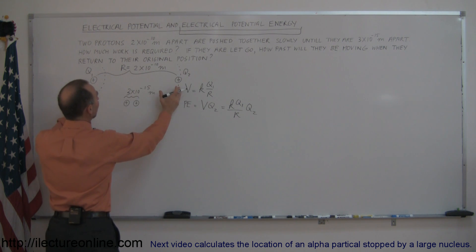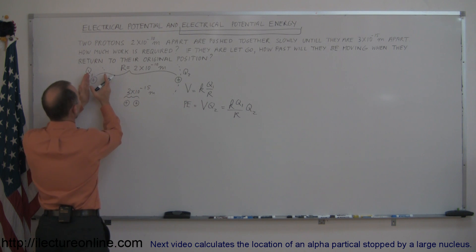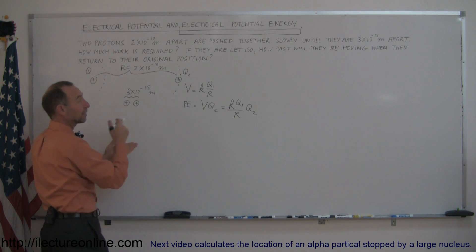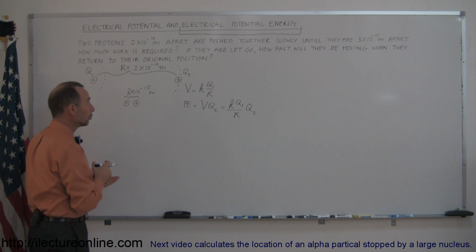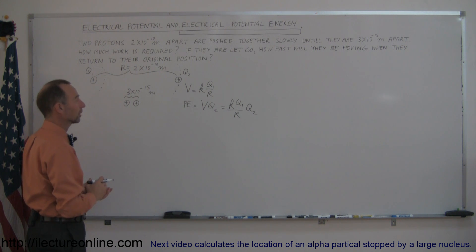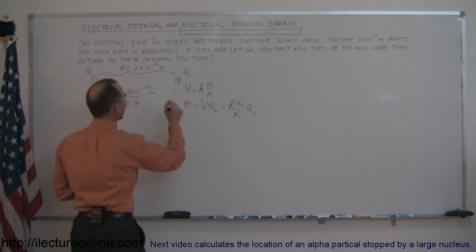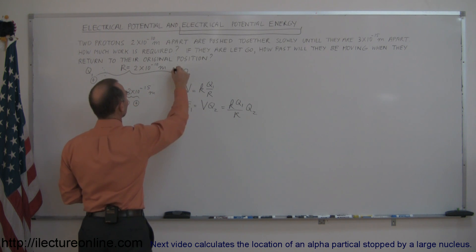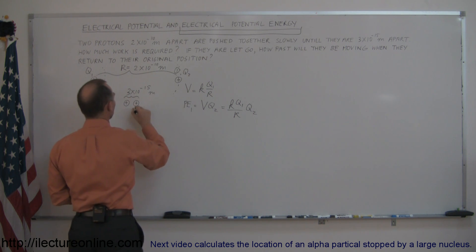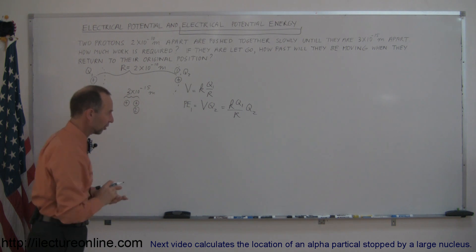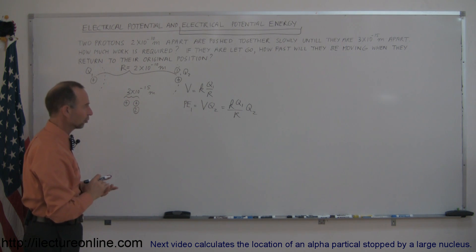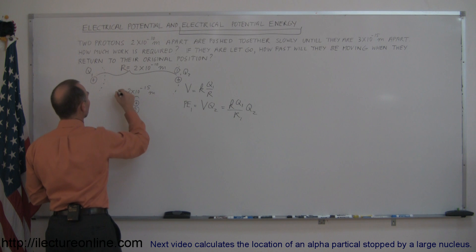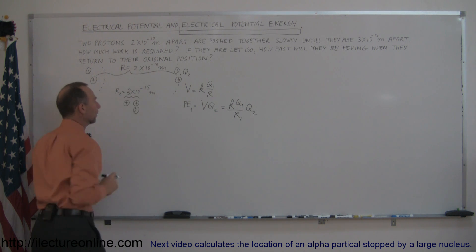We can say what would be the potential energy when the charges are much closer, and when we take the difference, that would be the work done to get the two protons to be that close together. Let's call this potential energy at position 1 and position 2, with distances R1 and R2.